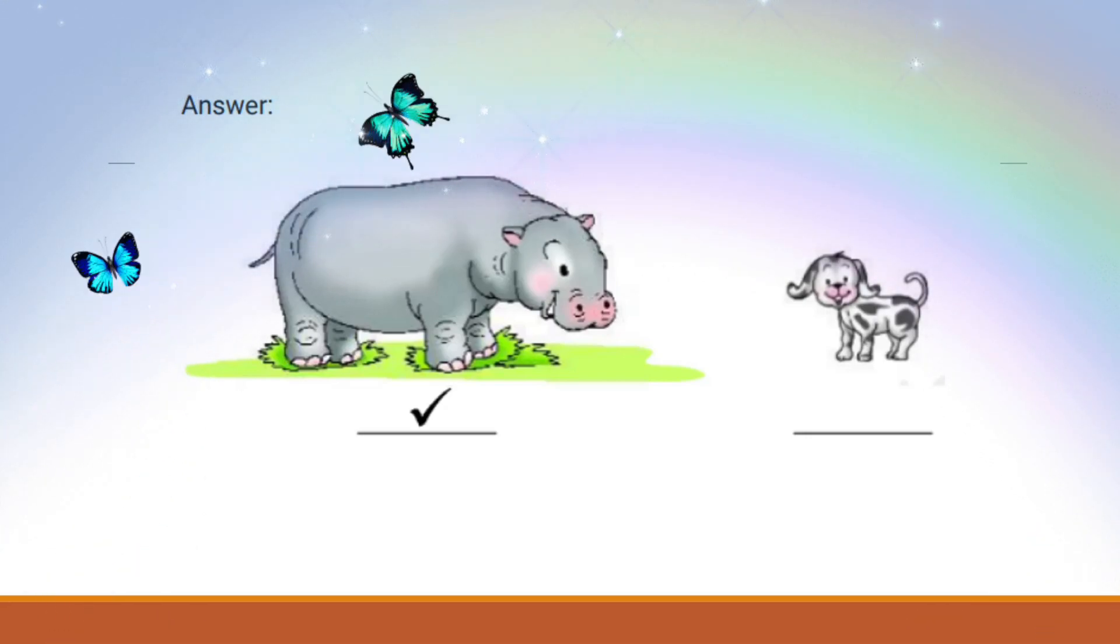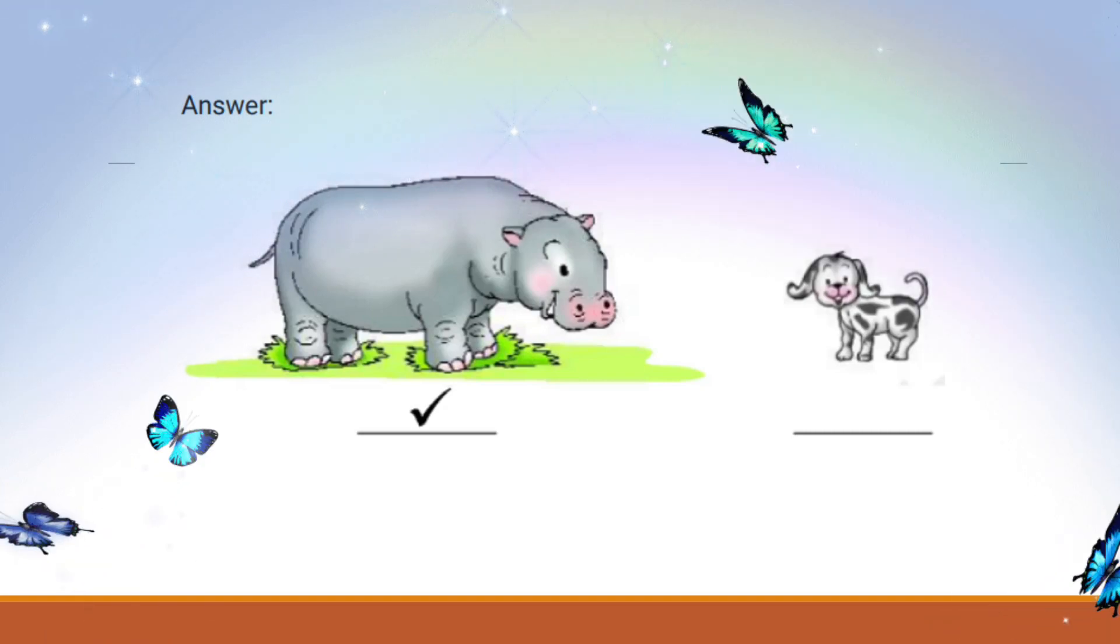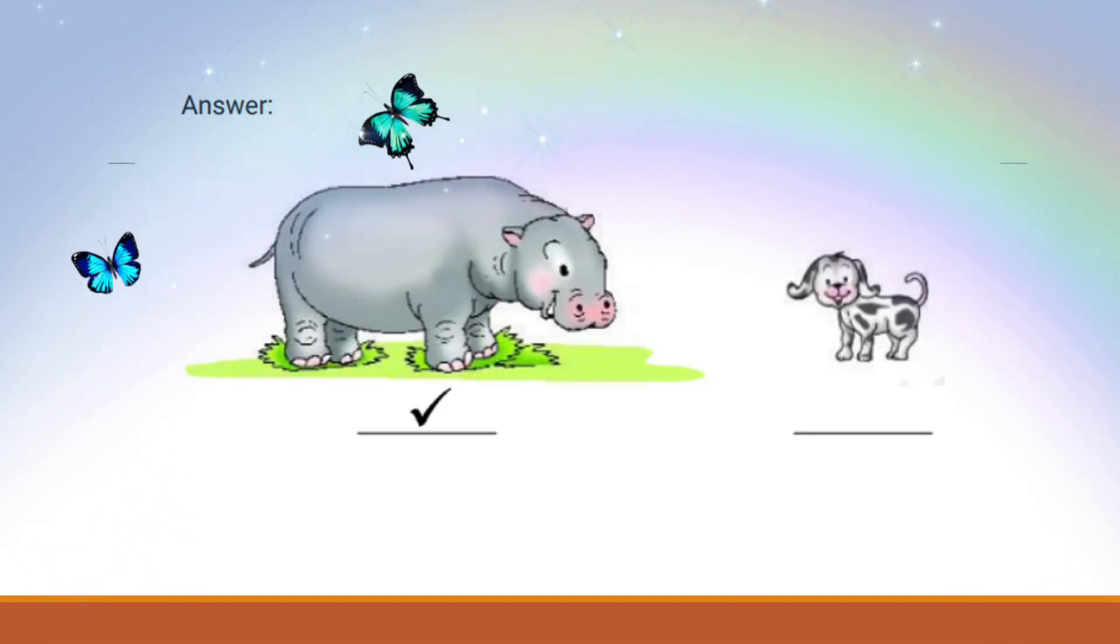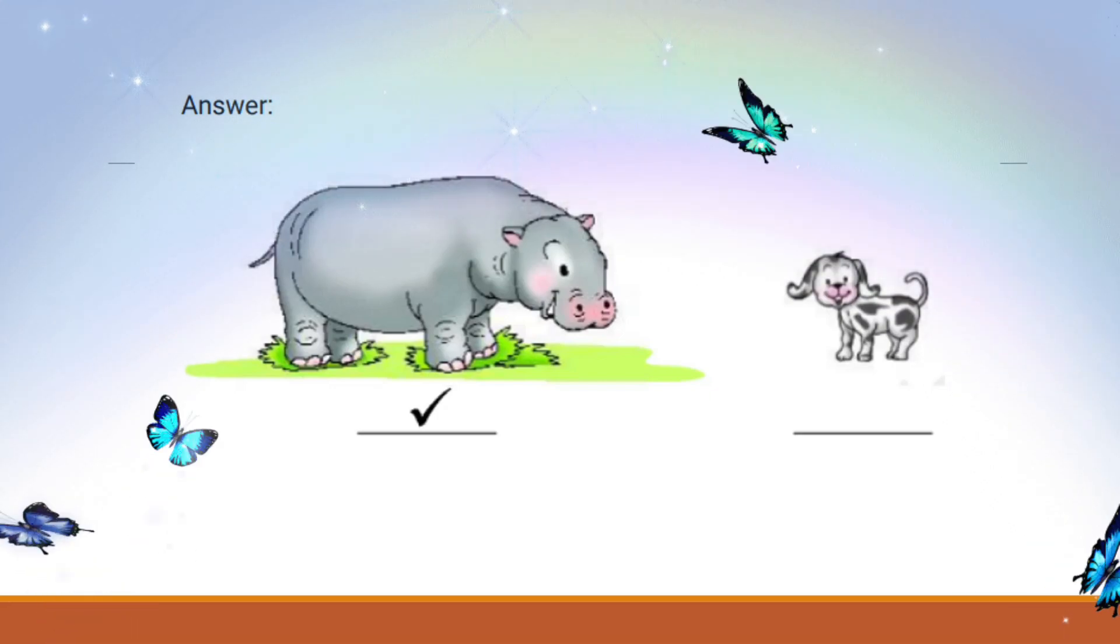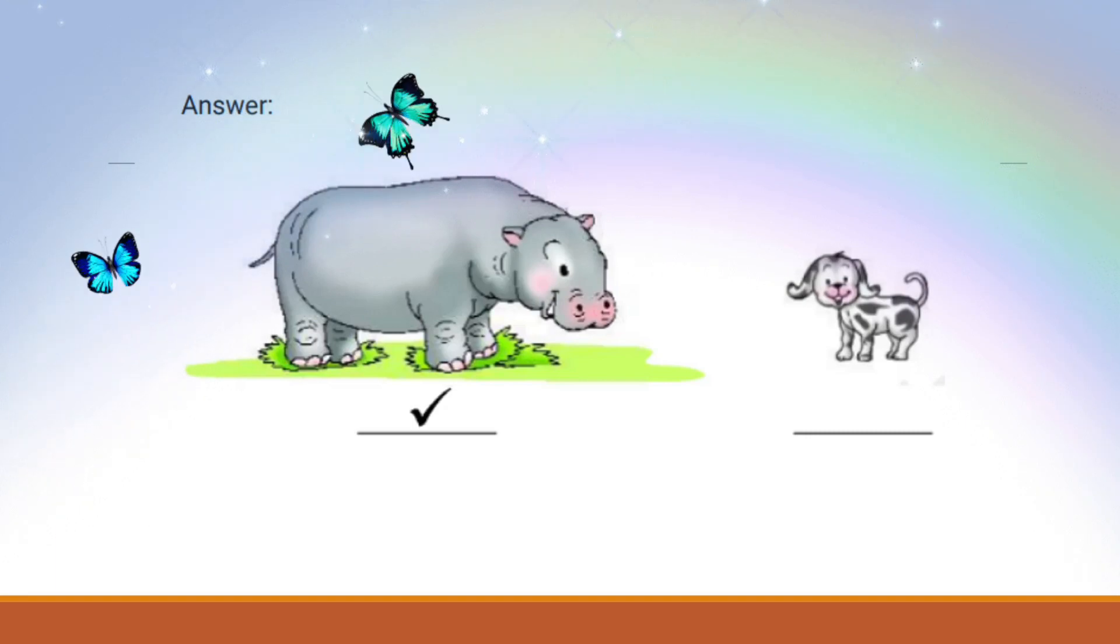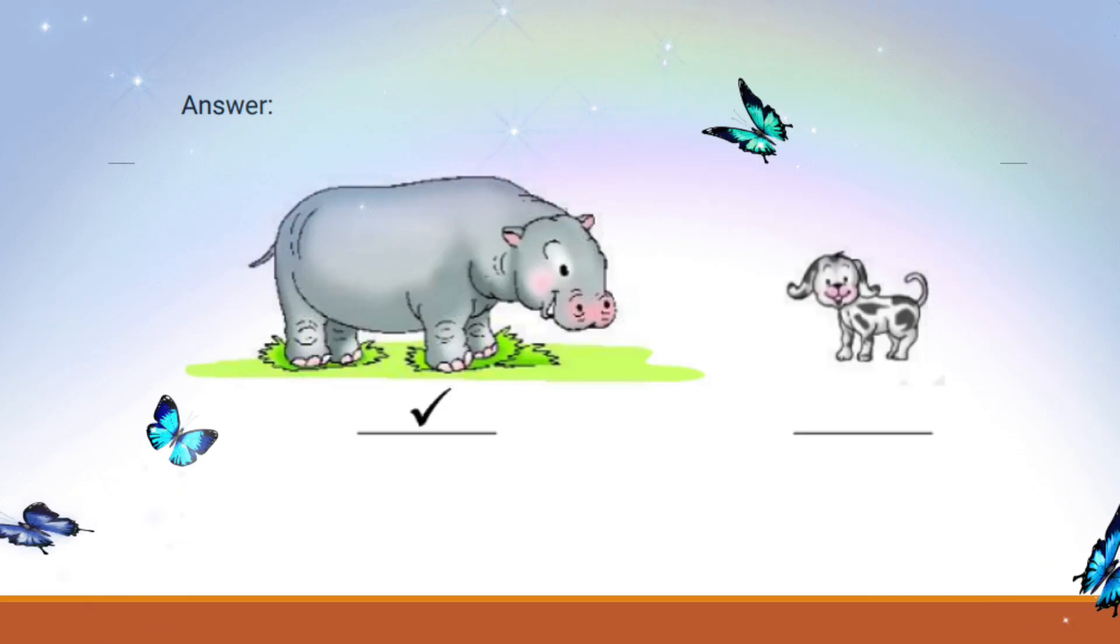So, what do you think, kids? Which one is bigger, the hippo or the puppy? That's right! The hippo is much bigger than the puppy. It's so big that you can't even imagine how enormous it is. Now, let's all tick the hippo, because it's the bigger one.